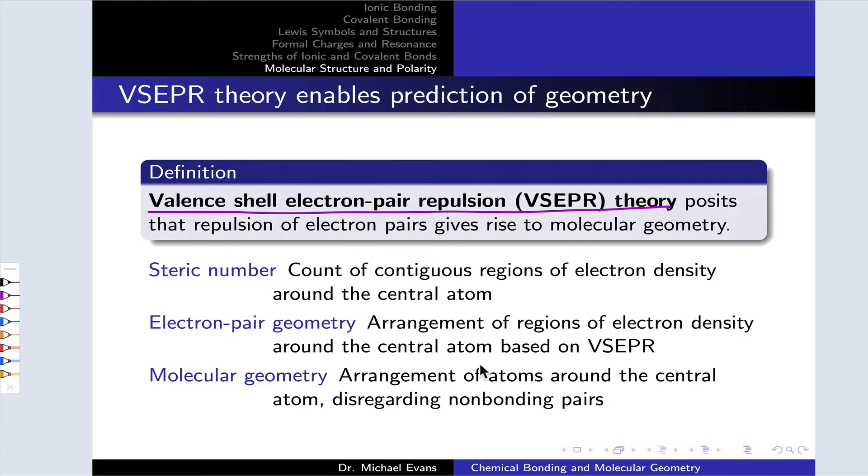For that reason, we can start with a Lewis structure, examine what's called the steric number, the number of regions of electron density or electron clouds around the central atom. That steric number implies an electron pair geometry, the ideal arrangement in terms of minimizing electron-electron repulsion of the electron clouds around the central atom. From that, an appreciation of the number of bonds and non-bonding lone pairs in the structure, we can infer what's called the molecular geometry or shape. This refers to the arrangement of the atoms around the central atom, disregarding the non-bonding lone pairs. There's a subtle distinction here that we'll explore as we get into the details of VSEPR theory.